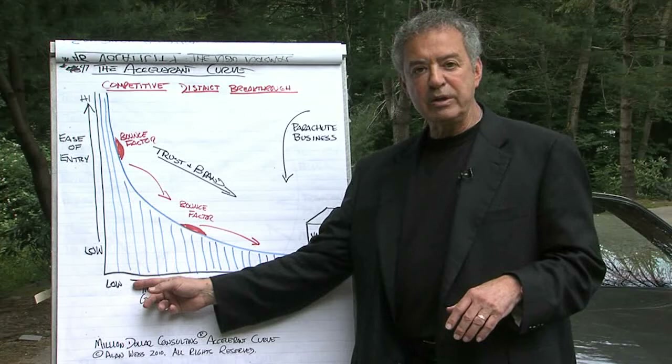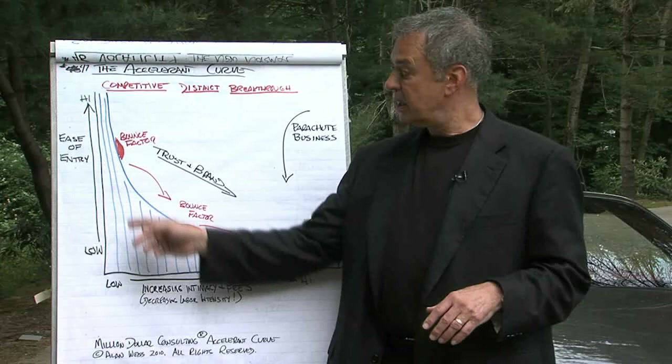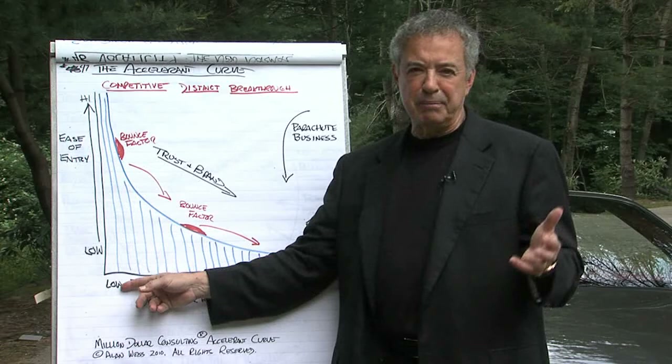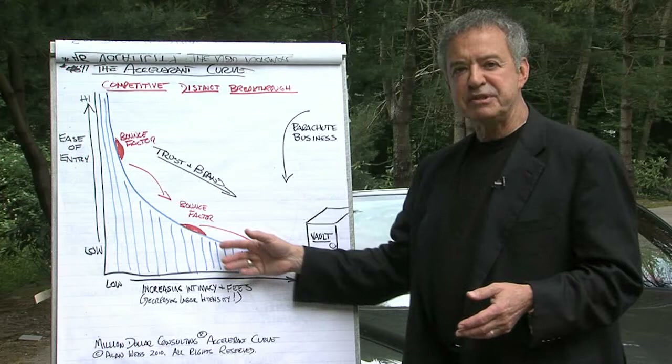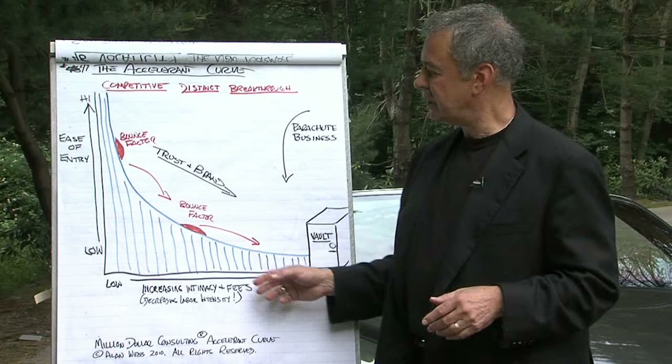On the horizontal axis, we go from low intimacy to high intimacy, and low fee to high fee. As ease of entry is easy, there's no intimacy — anybody can buy a booklet or listen to a teleconference and the fee is low. But as you go from left to right, the intimacy increases, the fee increases, and the entry becomes more difficult.